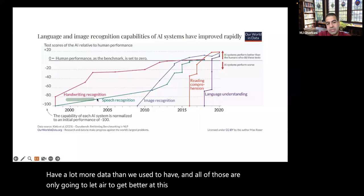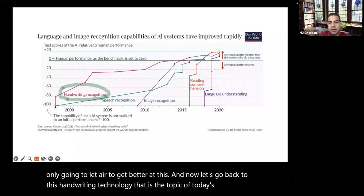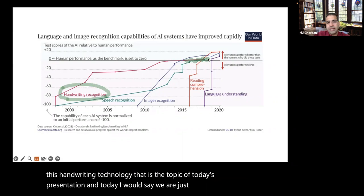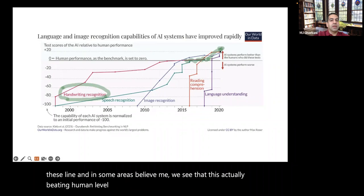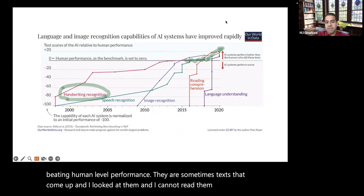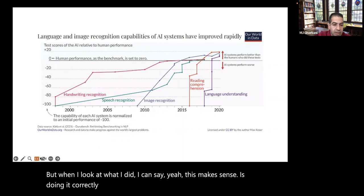Now, going back to handwriting recognition — today we are juggling around the human-level performance line. In some areas, we actually see AI beating human-level performance. Sometimes texts come up that I cannot read, but when I look at what AI did, I can say it makes sense — it's doing it correctly.